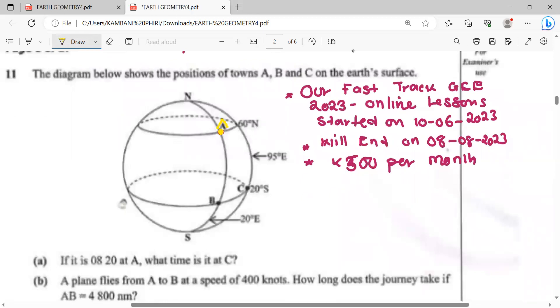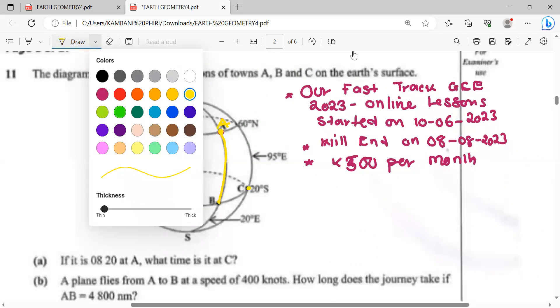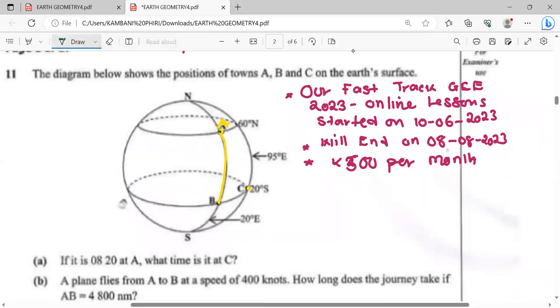If it is 8:30, what time is it at C? What you need to realize is that if it is 0820 at A, it will be 0820 at B because they are in the same longitude. Time can only differ if there's a difference in longitude.